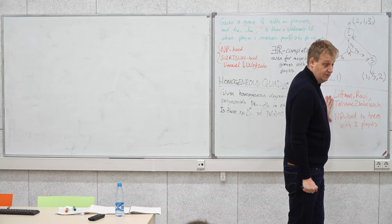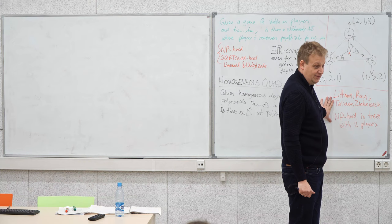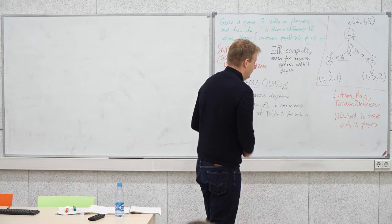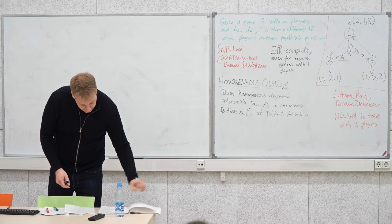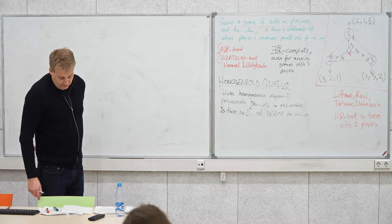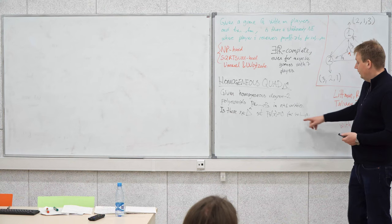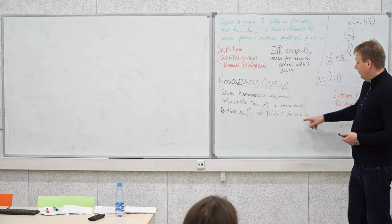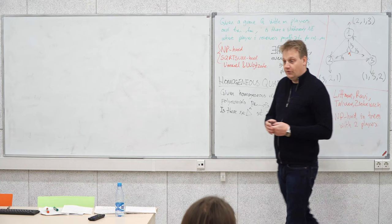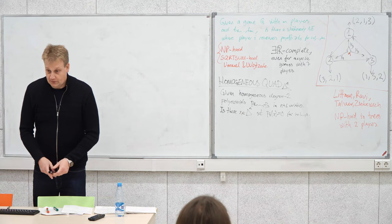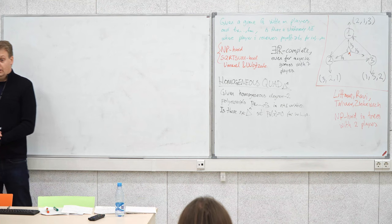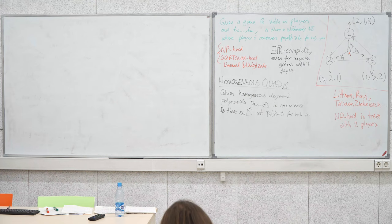In trees, every strategy is stationary. The goal is to make the reduction by building a game where one of the players has to choose the probability distribution X, which will be the root of the system if the payoff demands are actually met. This is the first sub-game or gadget of the proof: a small game where one player is choosing the probability distribution.